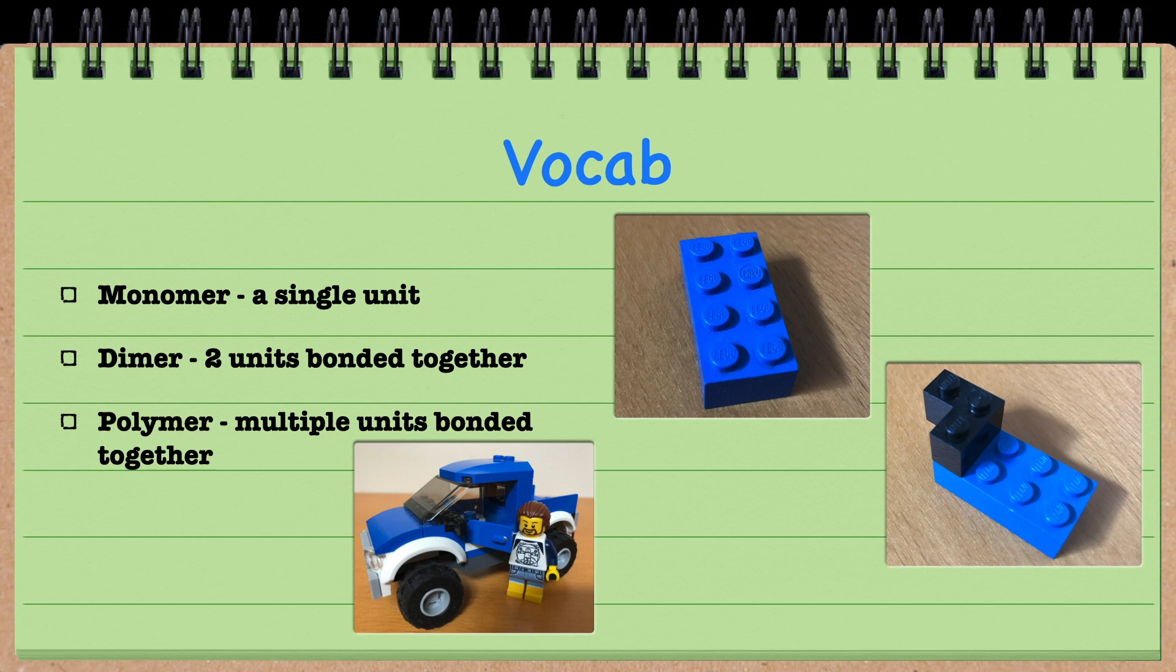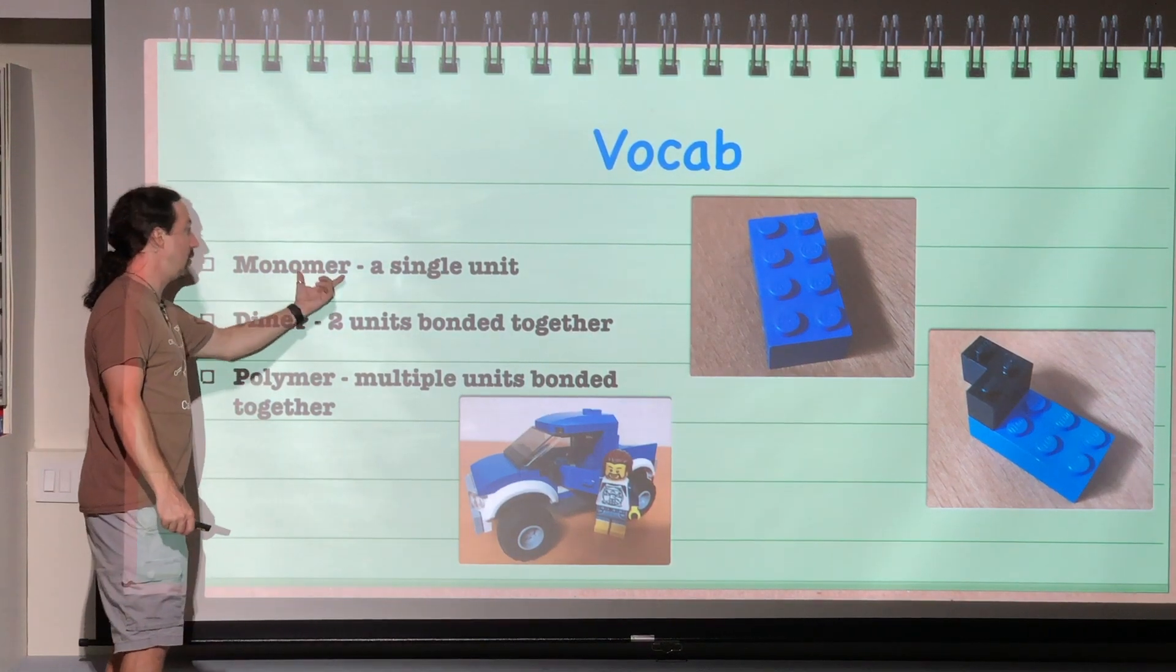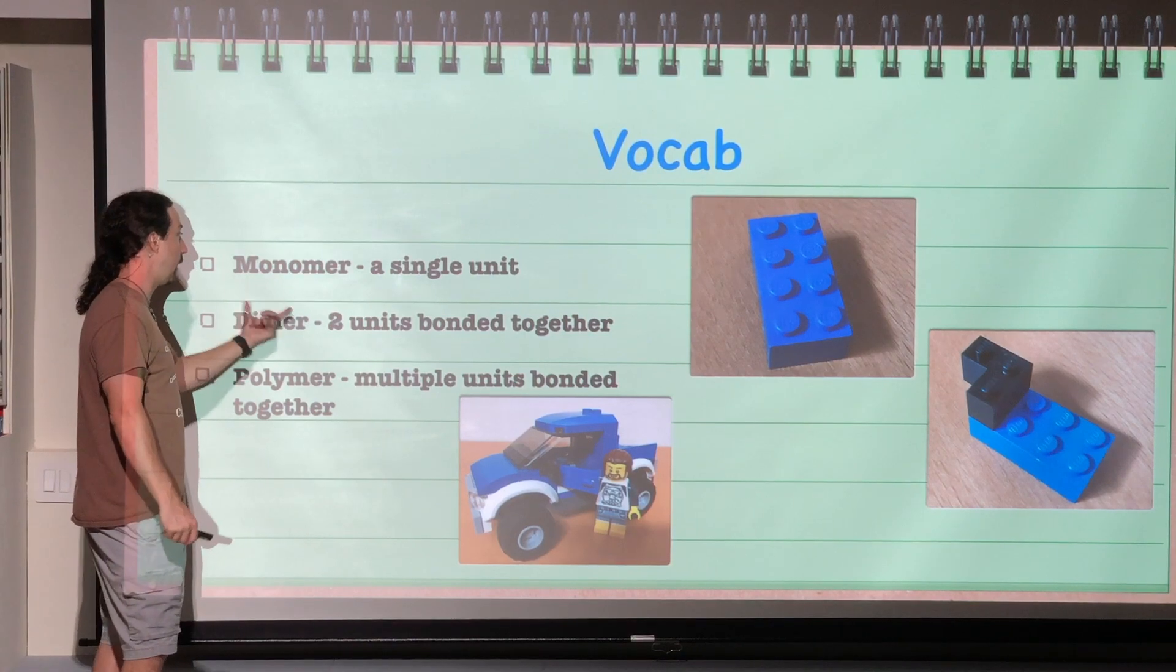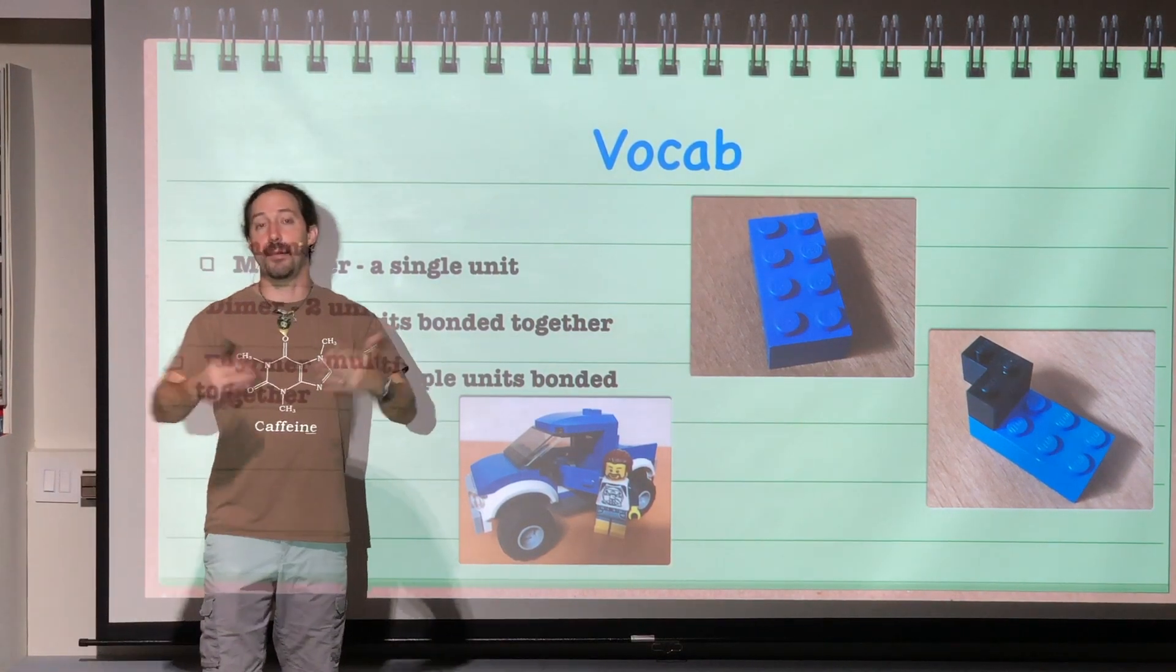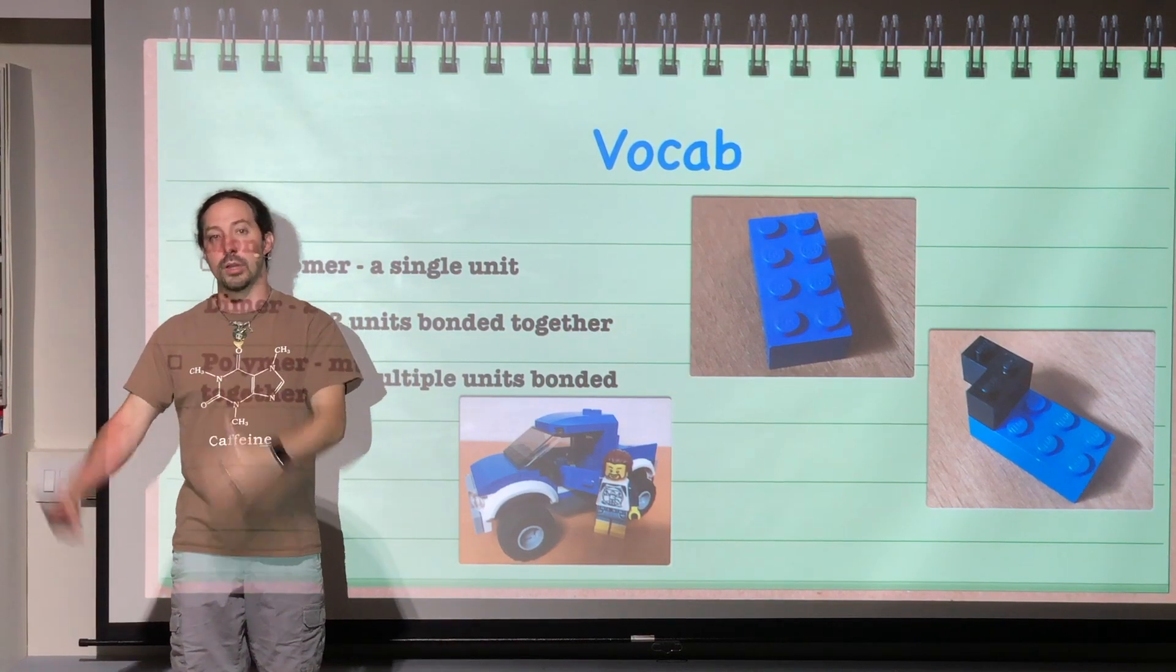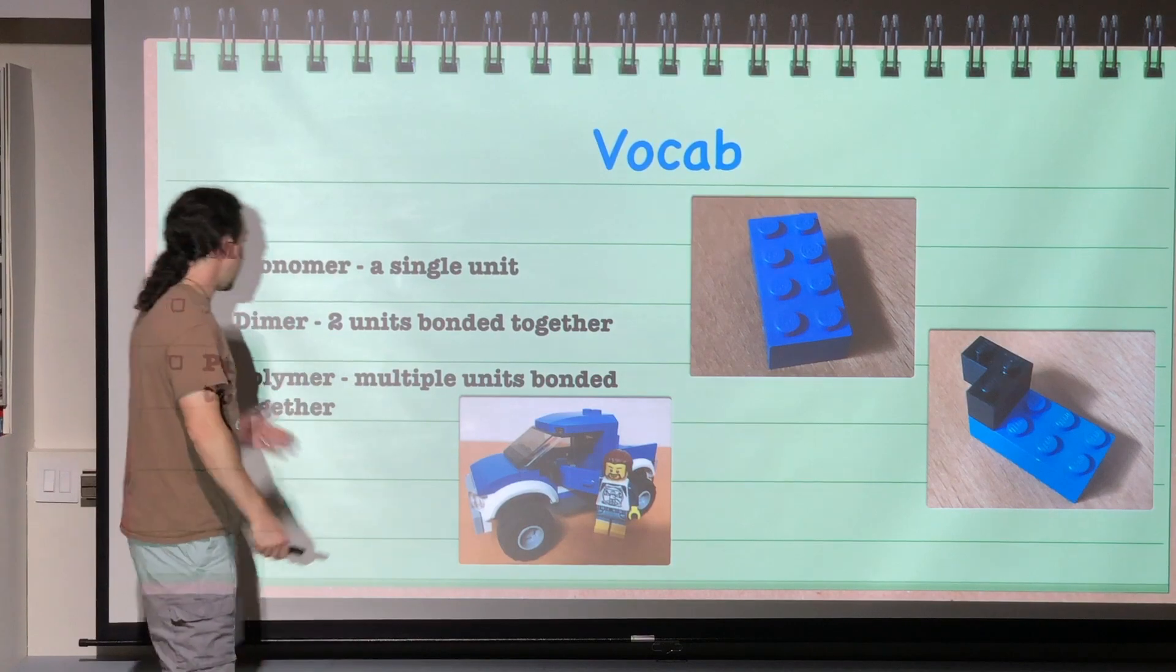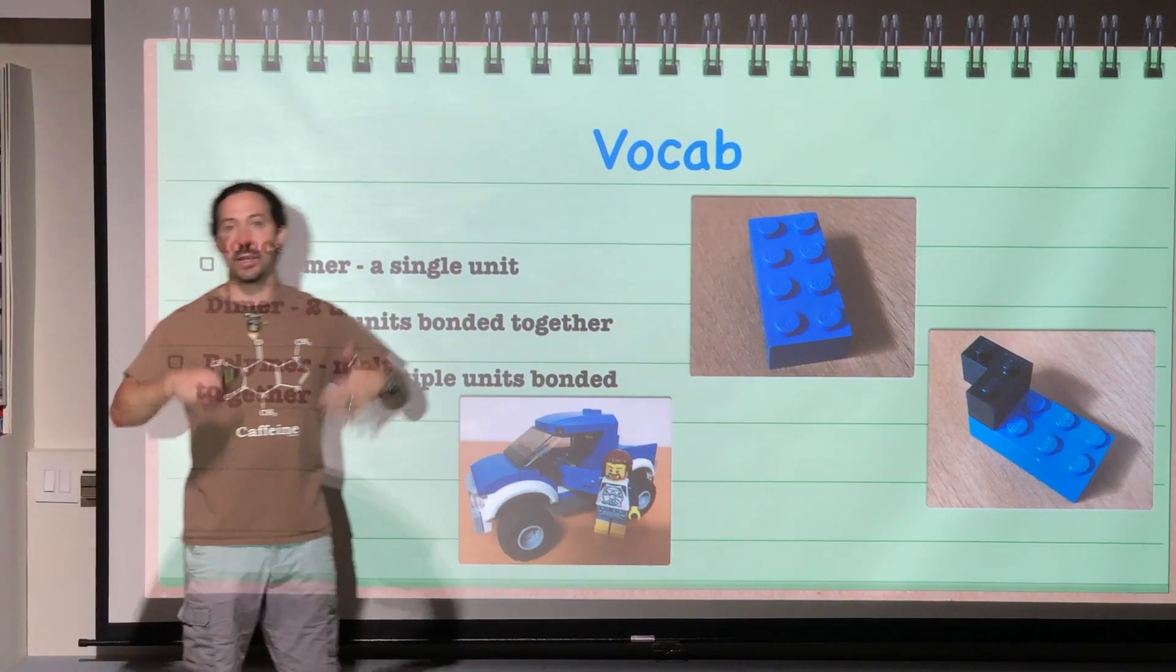If you ever saw a brick wall, each individual brick would be a monomer. Each individual brick would be a single unit. That's what monomer means, by the way. Mono, single or one, mer, unit. So each brick of a brick wall would be a monomer. The entire wall would be a polymer because it is all those units bonded together forming a structure.